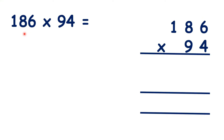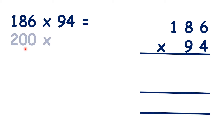We need to work out 186 times 94. But before we do that, let's estimate our answer. How can we do that? Well, if we round 186 to the nearest 100, we get 200.